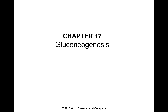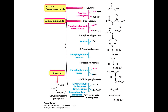Gluconeogenesis is almost the reverse of glycolysis. 'Gluco' means glucose, and 'neogenesis' means producing it. This is really important because we're producing glucose from a non-carbohydrate source. We can produce it from lactate — amino acids can come into this pathway, going from lactate to pyruvate. Glycerol could also come into this pathway, along with some additional amino acids. The purpose of this pathway is synthesizing glucose from a non-carbohydrate source, so there are all sorts of different precursors for this.